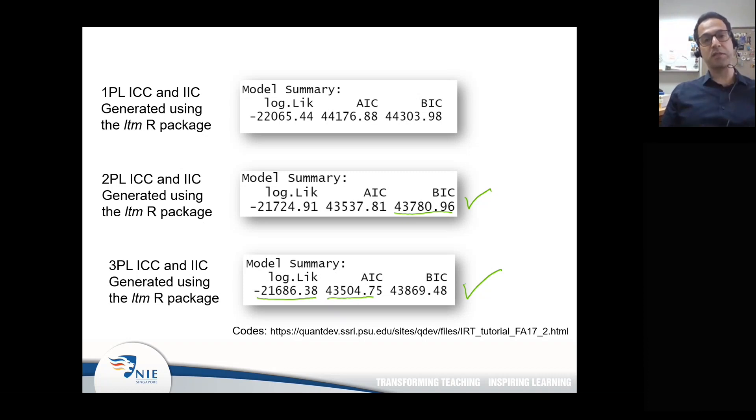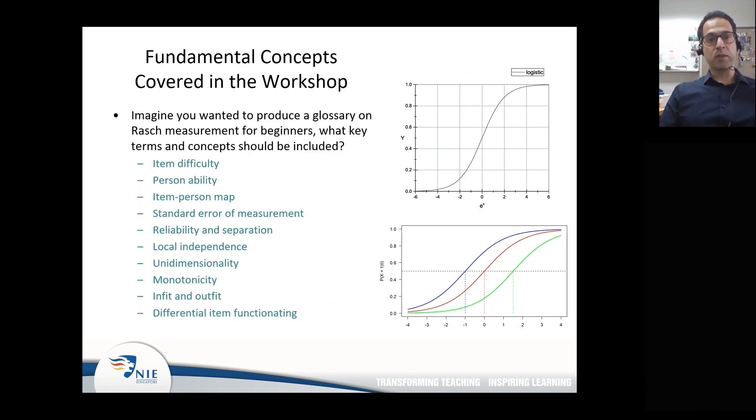Then you have to look at the item statistics. And by collecting more pieces of information and putting them together, you will complete that jigsaw puzzle. Then you will decide which one is the best fit, based on which you will go ahead and estimate the ability level of people. Based on those ability levels, of course, you will make decisions about who can pass the test, who has gained enough knowledge or who has not gained enough knowledge and so on.